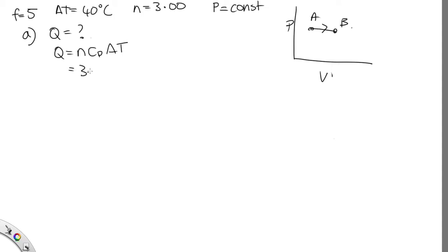So we're told that there's 3 moles. Now, Cp is equal to R plus F over 2R. And in this case, F is 5. So this is 7 over 2R, which is 29.099. So substituting that in, 29.099. And the change in temperature is 40.